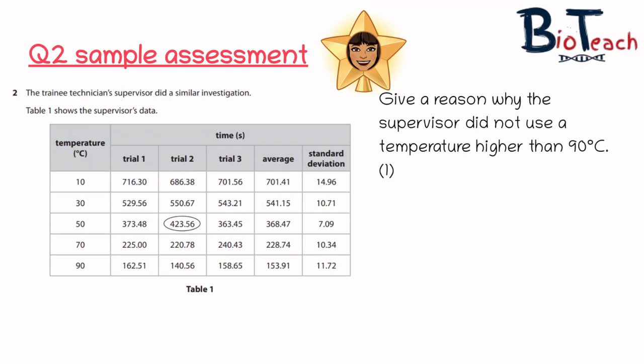The first question says give a reason why the supervisor did not use a temperature higher than 90 degrees. Well when we're looking at experiments like this and we're trying to choose a range of temperatures, we want to choose a range of temperatures that are realistic for us to be able to create but also safe for us to be able to create.